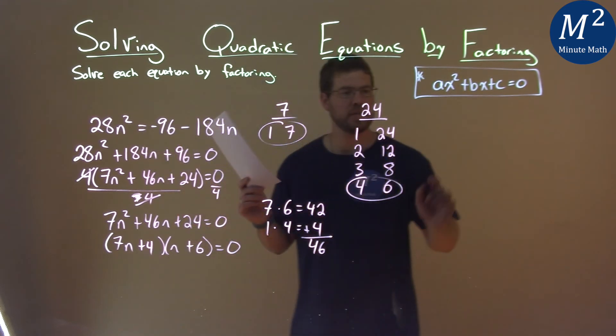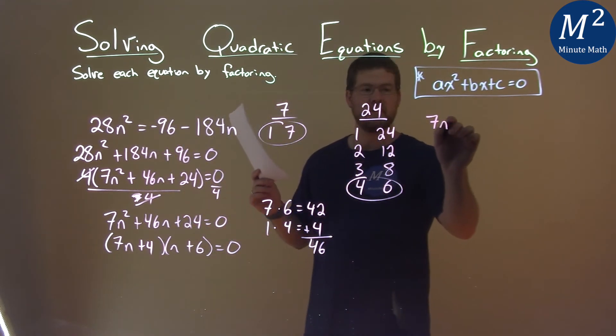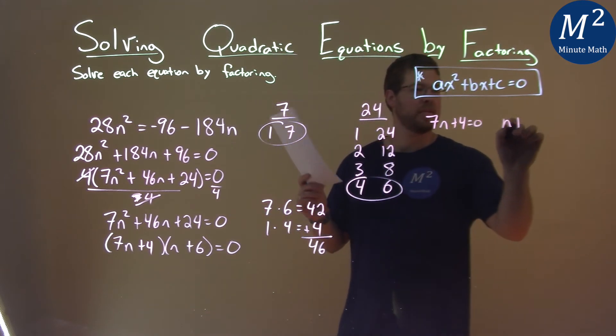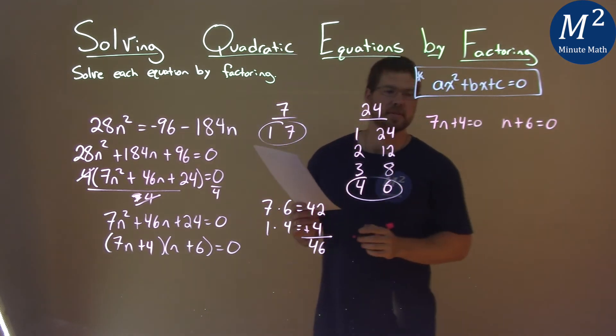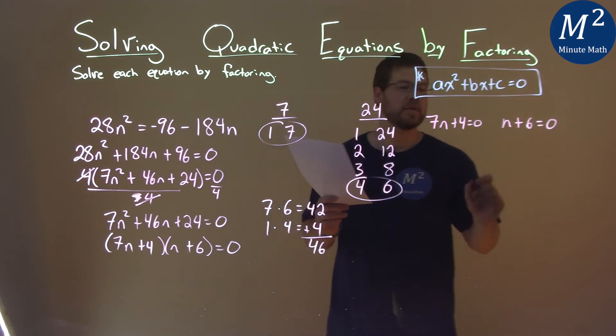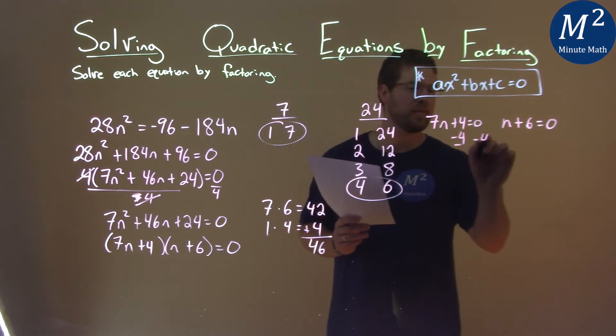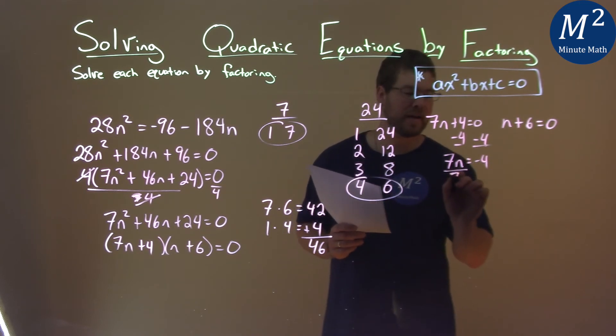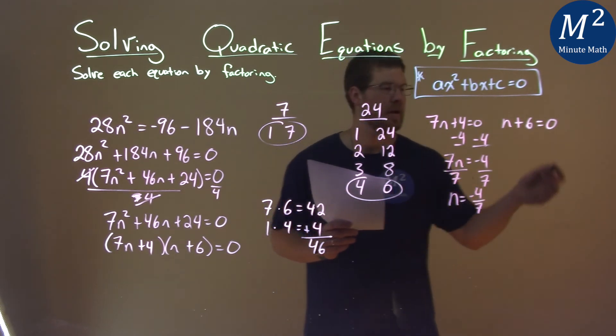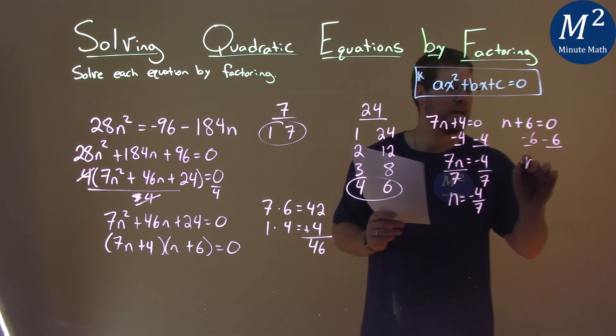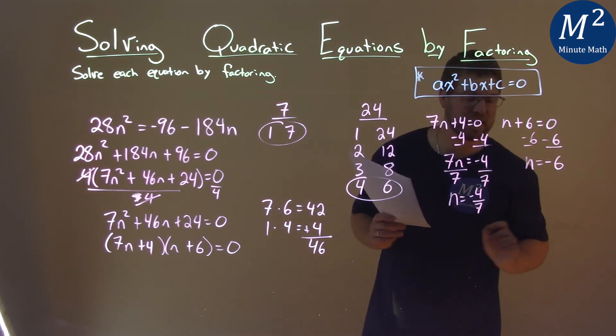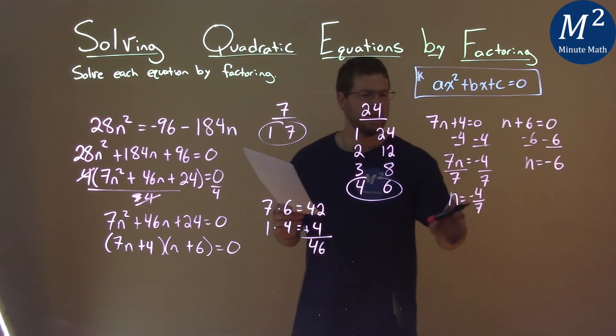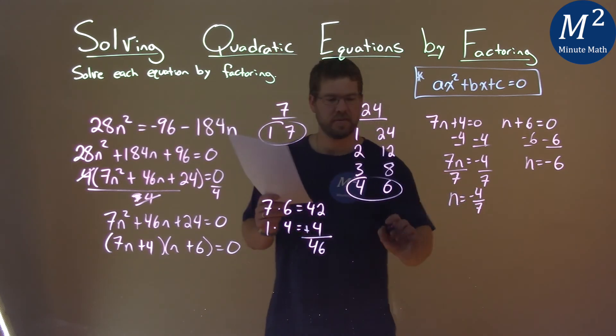We set both parts individually equal to zero. So we have 7n plus four equals zero, and then n plus six equal to zero. Now let's solve. Subtract the four to both sides, pretty easy. 7n equals negative four. Divide both sides by seven, and n equals negative four sevenths. The second equation gives n equals negative six.